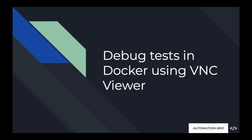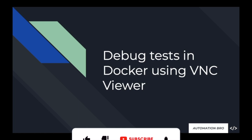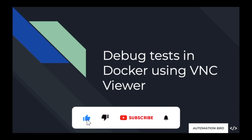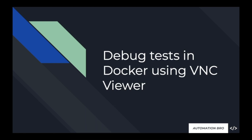Before we jump onto how we can set up VNC Viewer and integrate that with Docker, I think it's important to understand why we even need to do that. Originally I was naming this slide 'view tests in Docker using VNC Viewer,' but the point of setting up VNC Viewer is not just to view the tests — the point is that when something fails, I should be able to debug my test. That is the whole point.